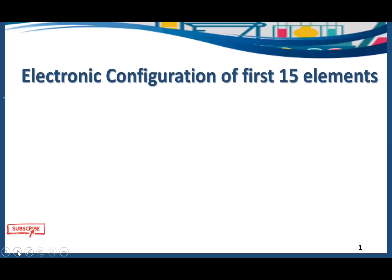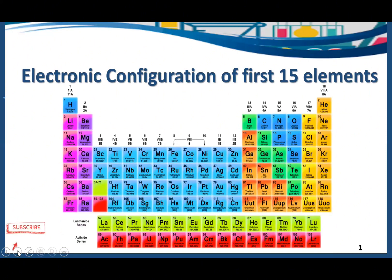Today we are talking about electronic configuration of the first 15 elements. Electronic configuration of an element describes how electrons are distributed in its atomic orbitals.